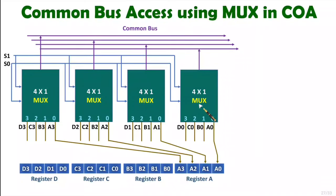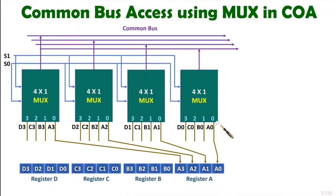First of all, you should know how a multiplexer functions. This multiplexer has a selection line. By using this selection line, an input can be transferred towards the output side. For example, if the selection lines are 0,0 then the 0th input will come on the output side. If the selection line is 0,1 then input number 1 comes on the output line. If it is 1,0 then input number 2 comes on the output line. If it is 1,1 then input number 3 comes on the output line.